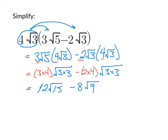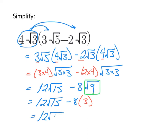This problem has one more step to look at — that square root of 9 should jump out at you. We know that √9 is a really nice number: √9 equals 3. Since it's negative 8 times √9, we multiply negative 8 times 3, and we're left with 12√15 minus 24. Our expression is completely simplified.